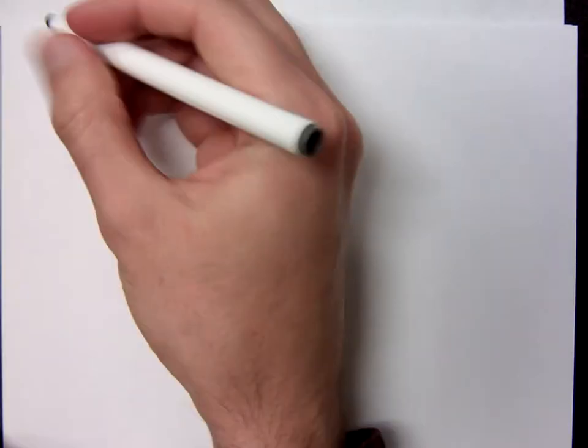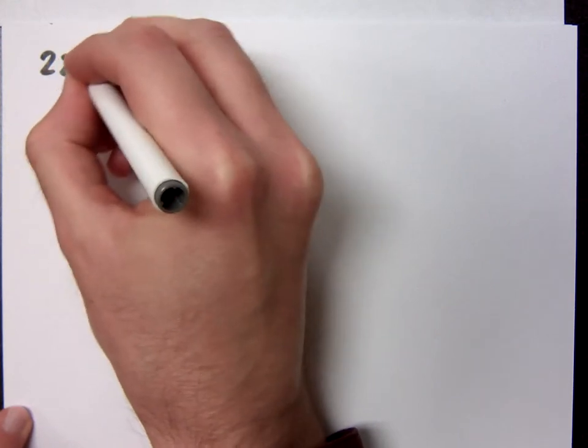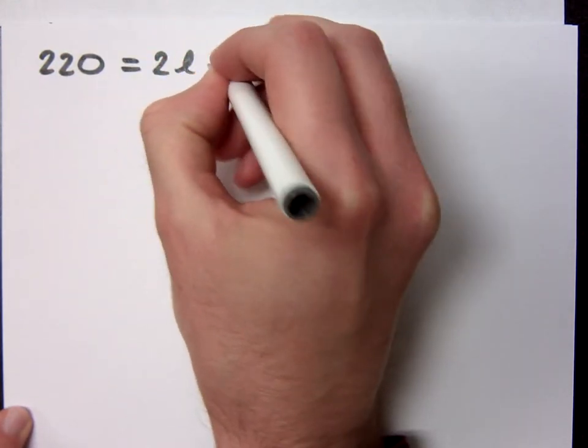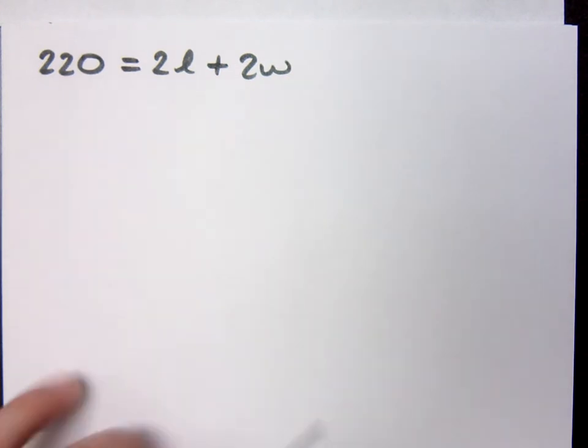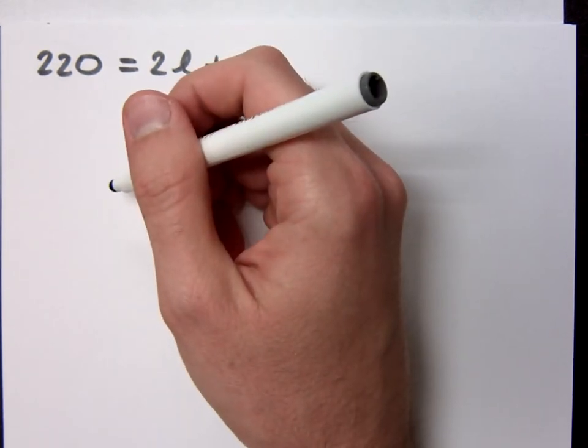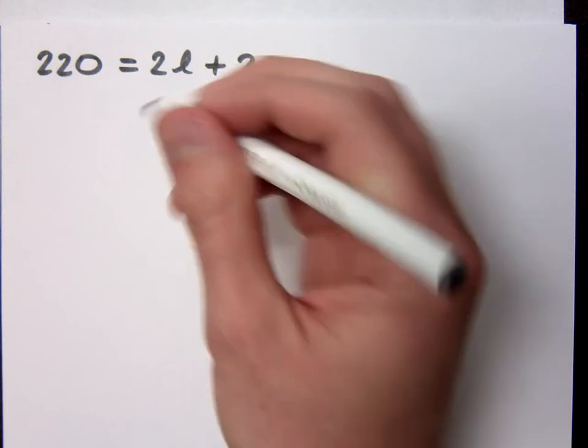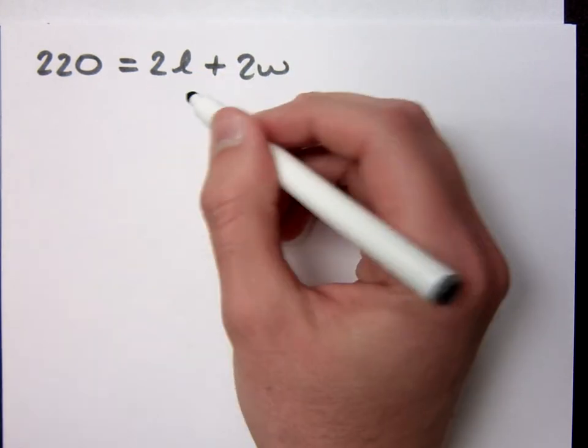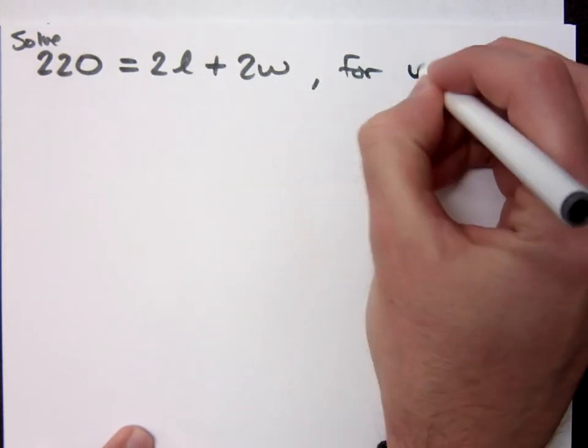Now here's what you can do though. You say, you know what dude? I'm on to your games. I am so on to your games. See, here's the thing. He keeps giving us 220 feet, right? And we know that's going to be twice the length plus twice the width. But this jerk keeps changing the L on us, doesn't he? So here's what we're going to do. We're going to take this guy and I'm going to solve this guy. I'm going to solve it for W.